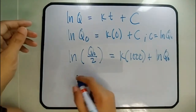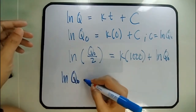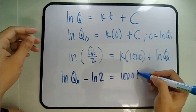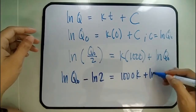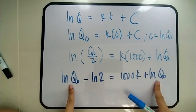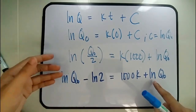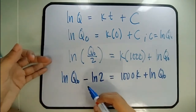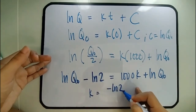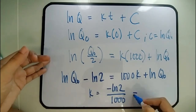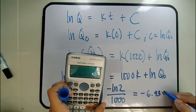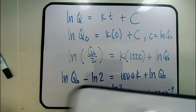Since ln(Q₀) appears on both sides, it cancels out. This yields K = −ln(2)/1000, which equals −6.93 × 10⁻⁴. With both constants found, let's proceed to the final answer.